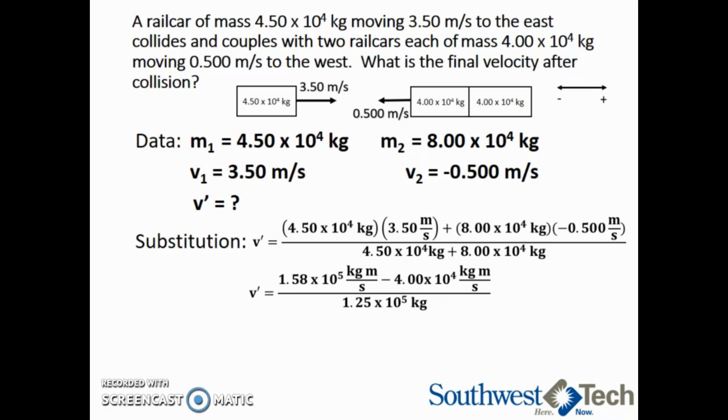Subtracting and then dividing, we see that V prime is equal to 0.944 meters per second. Since this number is positive, it means the coupled cars after collision are traveling east. This concludes our inelastic collision example.